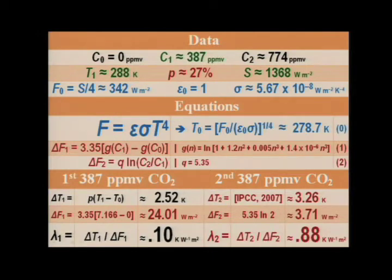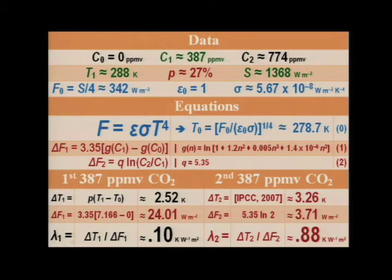We now come down to the equation itself, and what it tells us is that — in this modest experiment — I have removed the entire atmosphere, hydrosphere, and biosphere, taken it all away and left the Earth a bare rock. And then I've worked out, using this equation, how much cooler it would be. And it would be 9.3 degrees Kelvin cooler, not the 34 degrees you usually hear about.